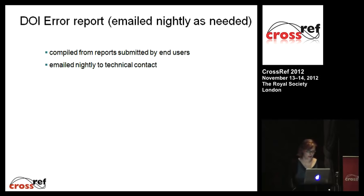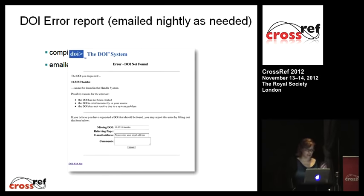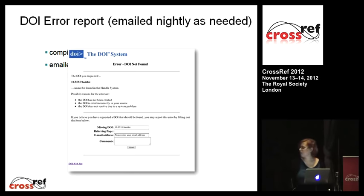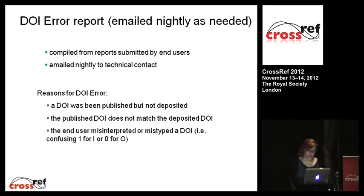The next report is the DOI error report. These are compiled from complaints about unresolved DOIs submitted to us by end users. If an end user tries to resolve a DOI that hasn't been registered, they see a form which they can submit with comments and their email address. If the DOI they've submitted is ever registered, we send them an alert. Any comments in these fields are passed on to publishers — but even if a user doesn't comment or leave their email, we send you a note saying someone told us this DOI isn't registered. The most common reason you'd get one is that you published a DOI but didn't deposit it, or you published a DOI that doesn't match the one you deposited. It could also just be user error, which usually nothing can be done about.